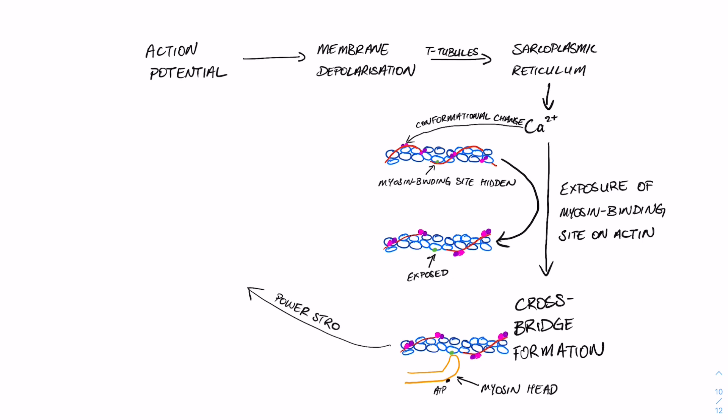Now what needs to happen next is the power stroke, whereby we need the myosin head to pull back and pull the thin actin filament with it to cause a shortening in the distance between that and the neighboring filament. And what we need for the power stroke is energy, and that comes in the form of ATP.